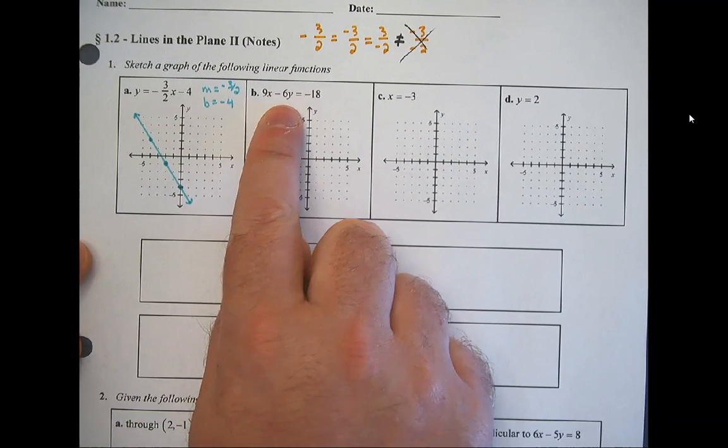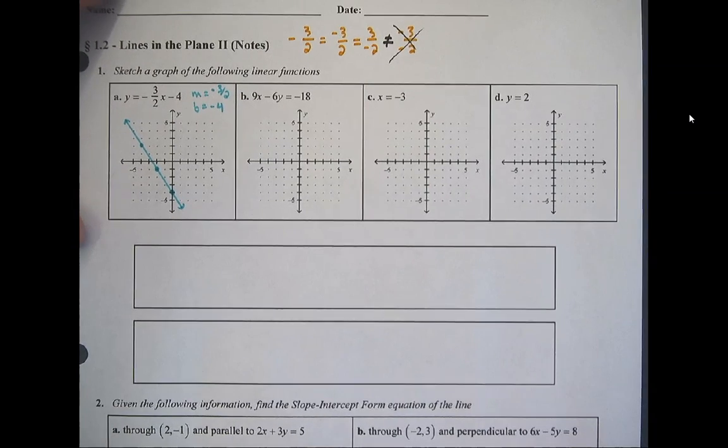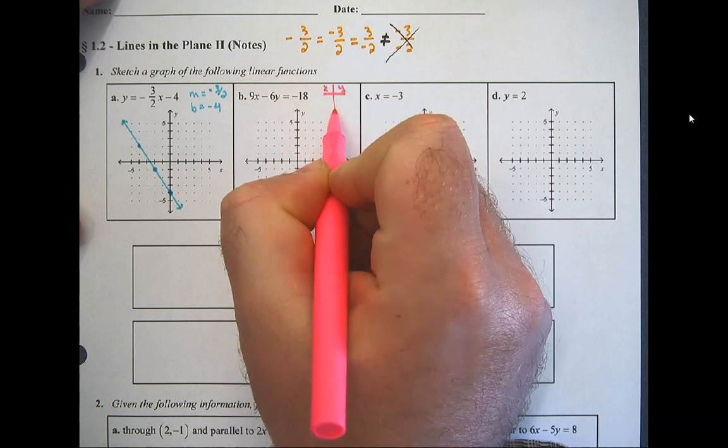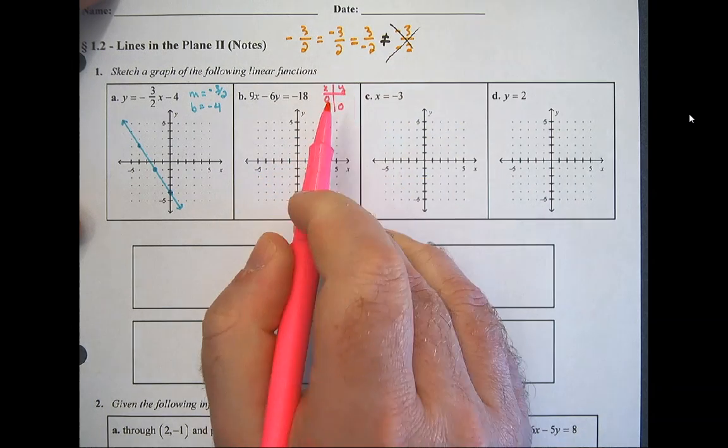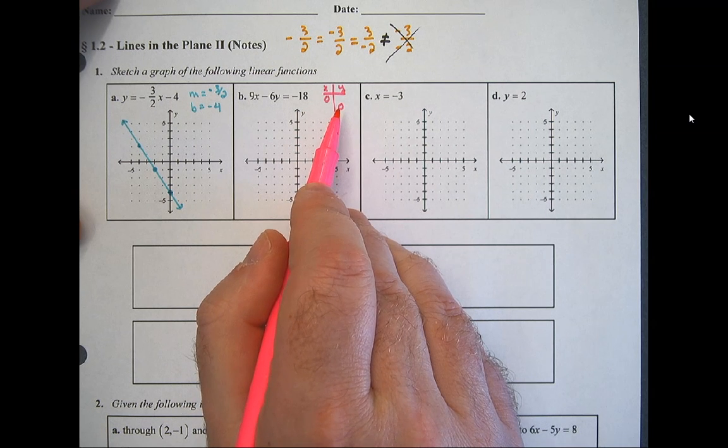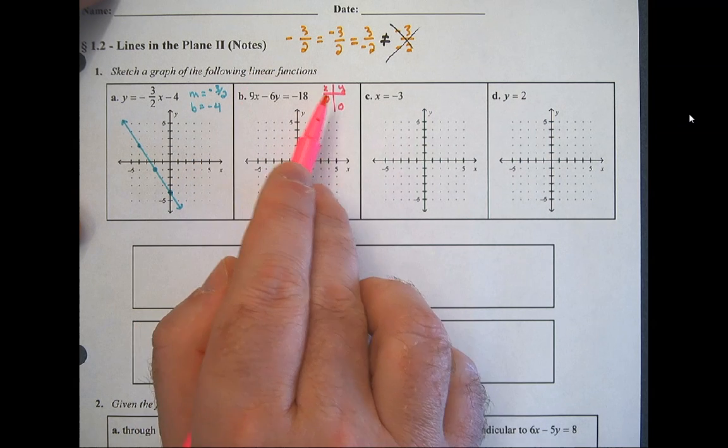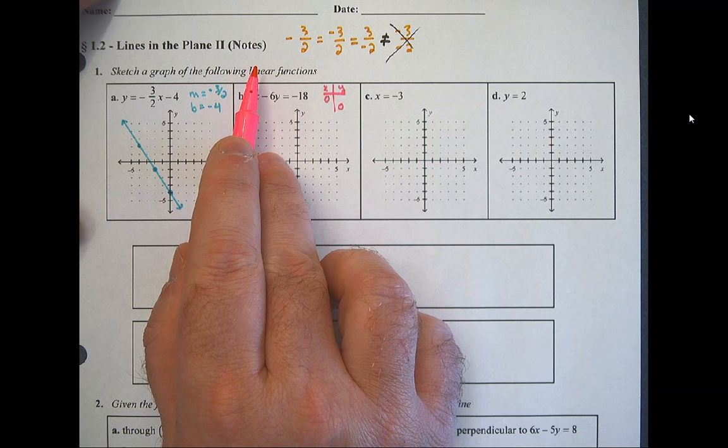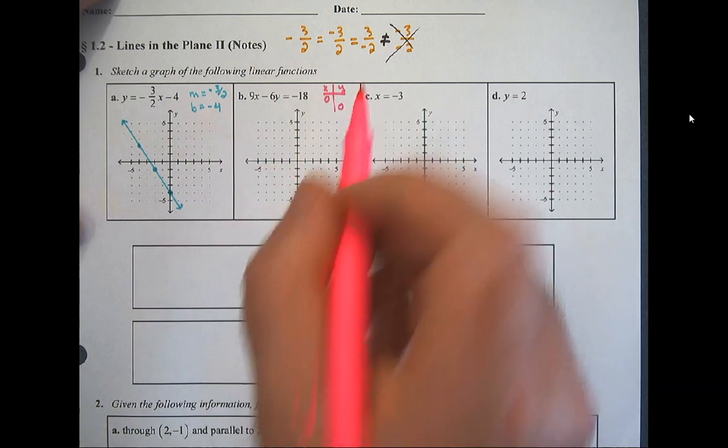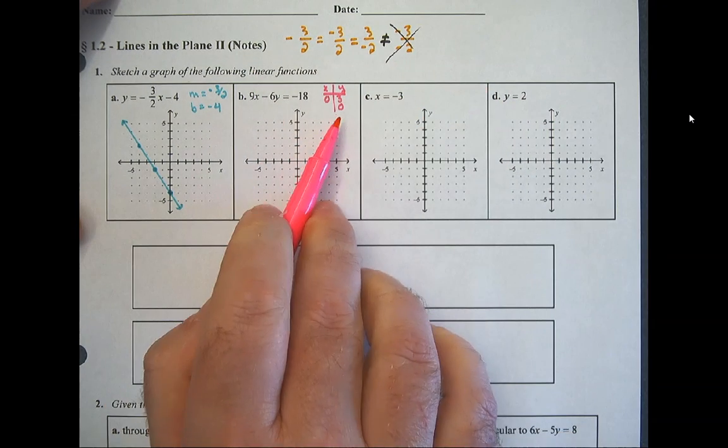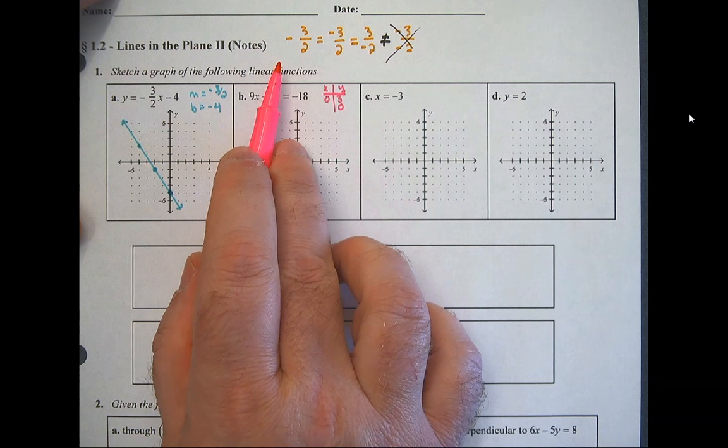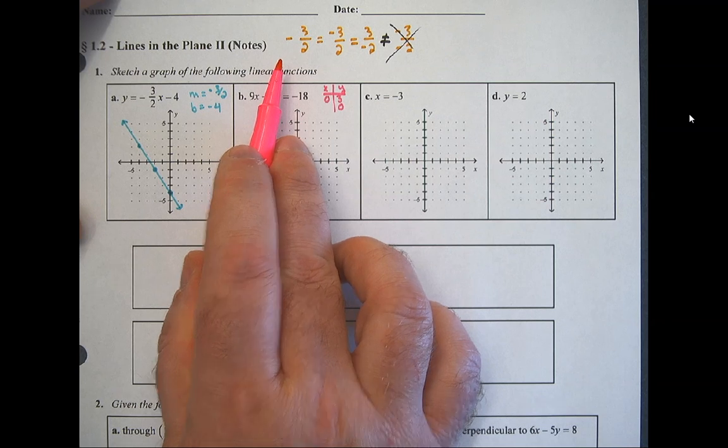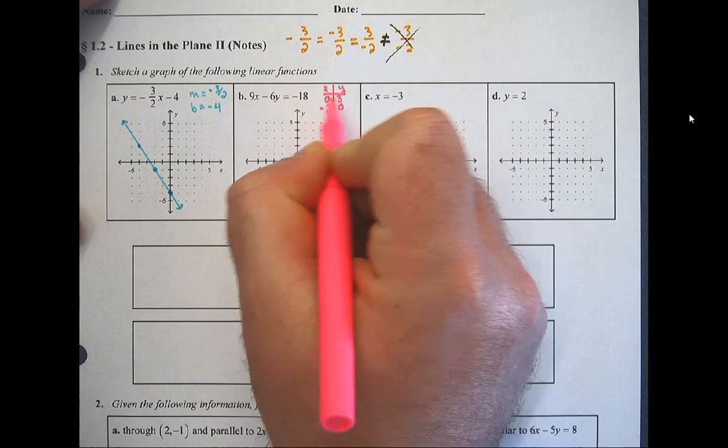Next is called standard form. Standard form is the cover-up method. What you're really doing is you're finding intercepts - the x-intercept and the y-intercept. In other words, you're plugging in 0 for x and 0 for y. When x is 0, that's 9 times 0, so this is basically just gone. So it says negative 6y equals negative 18, then y must be positive 3. Then when I put a 0 in for y, 9x equals negative 18, so x equals negative 2.